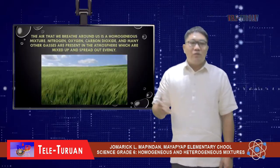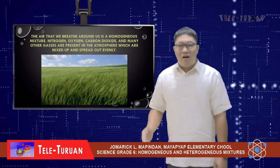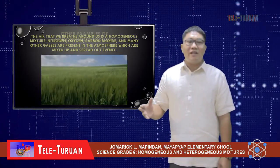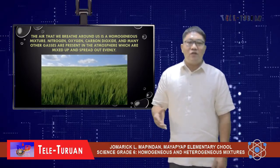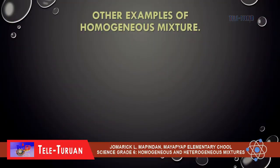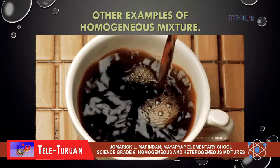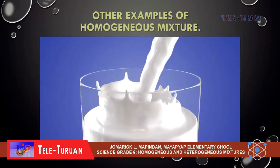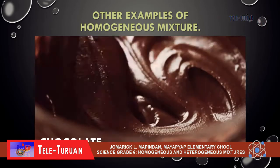An alloy is a homogeneous mixture of different melted metals. The air that we breathe around us is a homogeneous mixture — nitrogen, oxygen, carbon dioxide, and many other gases are present in the atmosphere, mixed up and spread out evenly. Here are other examples of homogeneous mixtures: water, coffee, milk, jelly, and chocolate.